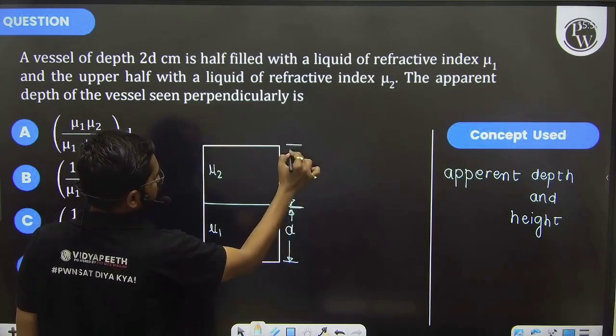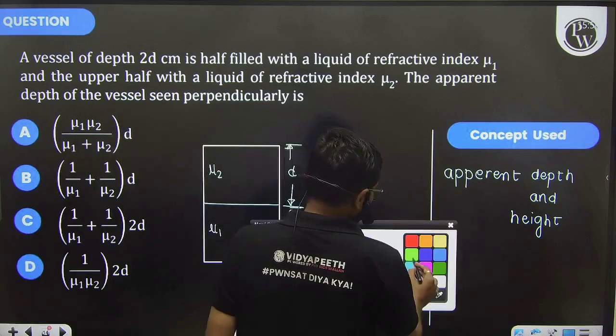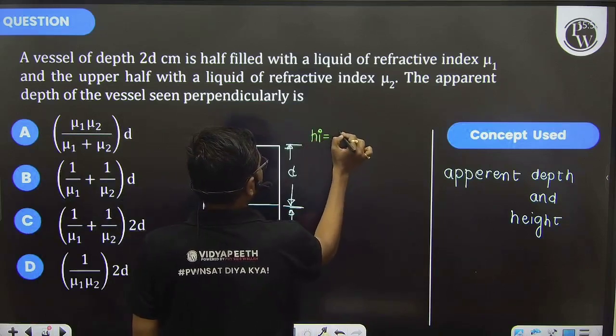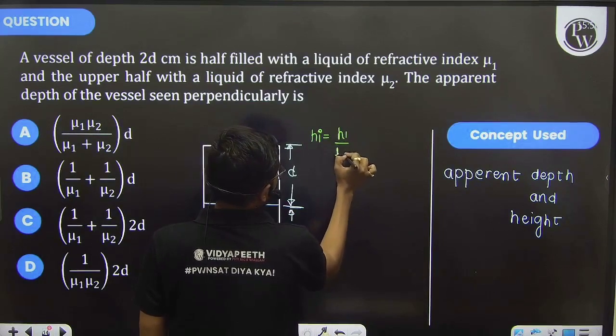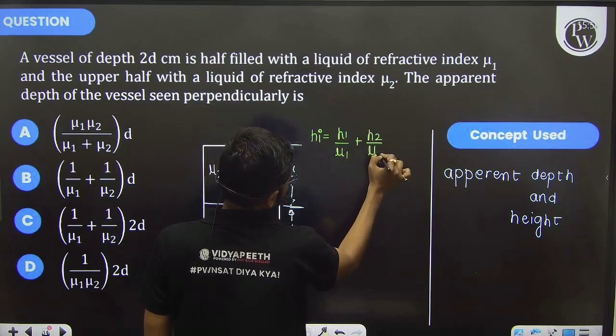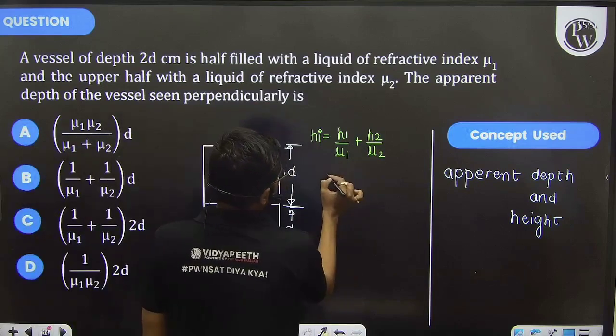This is d, this is another d, and the apparent height. We already studied the formula for the apparent height, that is h₁ over μ₁ plus h₂ by μ₂. Right, that we already studied.